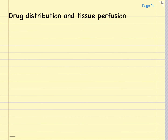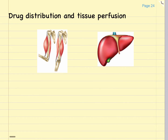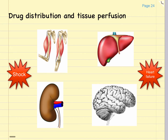Drug distribution depends on the perfusion of the tissues as well. Similar to drug absorption, drugs will be distributed most rapidly and in the highest concentrations to well-perfused tissues, such as well-exercised skeletal muscles, the liver, the kidney, and the brain. Conditions such as shock and heart failure decrease tissue perfusion to these different organs and will therefore decrease drug distribution to the tissues as well.